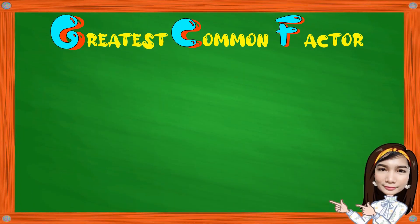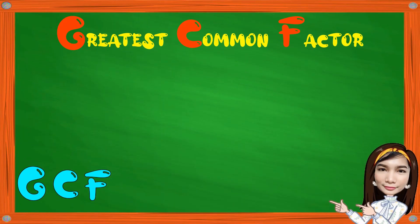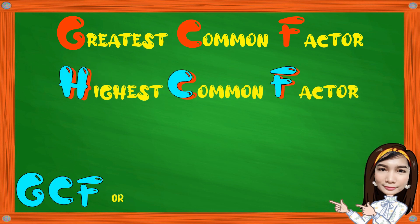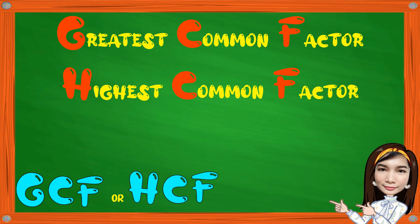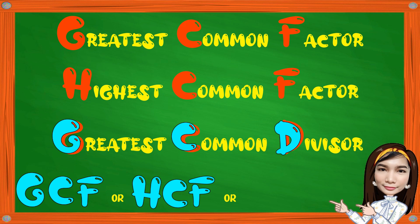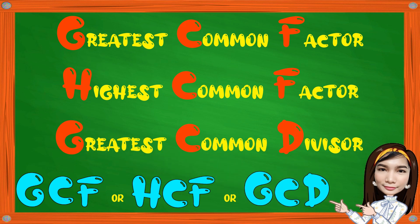Greatest Common Factor, or GCF, is also known as the Highest Common Factor or HCF, and also known as the Greatest Common Divisor or GCD. So don't be confused if you encounter those terms in other videos, because they have the same meaning or definition and are considered as one.